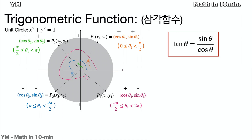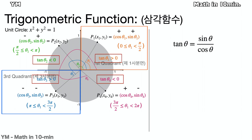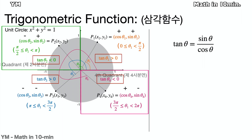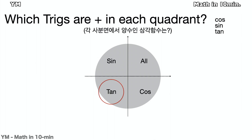How about tangent? Tangent is sine over cosine, and is also the slope of the line OP. So tangent is positive in the first and third quadrants, and negative in the second and fourth quadrants. In the first quadrant, where theta is between 0 and pi over 2, all trigonometric functions are positive. In the second quadrant, where theta is between pi over 2 and pi, sine is the only positive one. In the third quadrant, where theta is between pi and 3 pi over 2, tangent is the only positive one. In the fourth quadrant, where theta is between 3 pi over 2 and 2 pi, cosine is the only positive one.